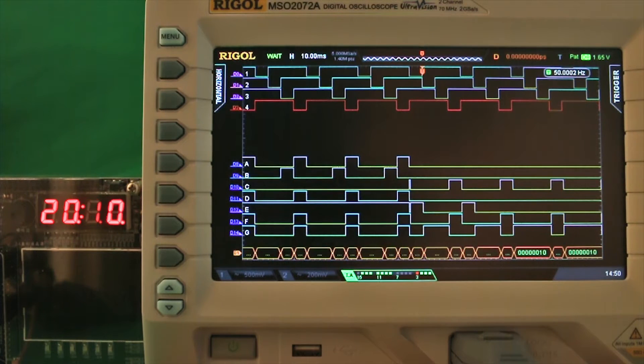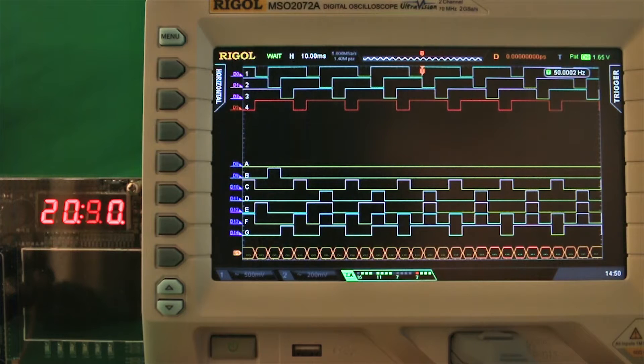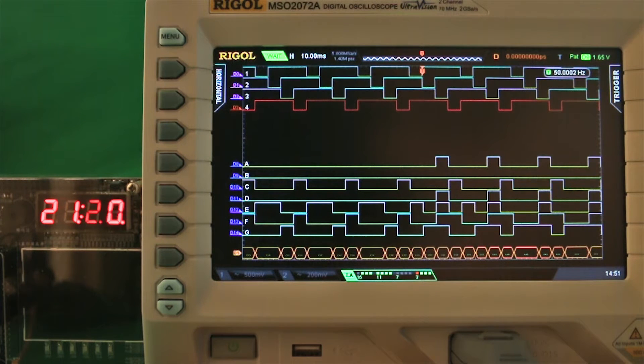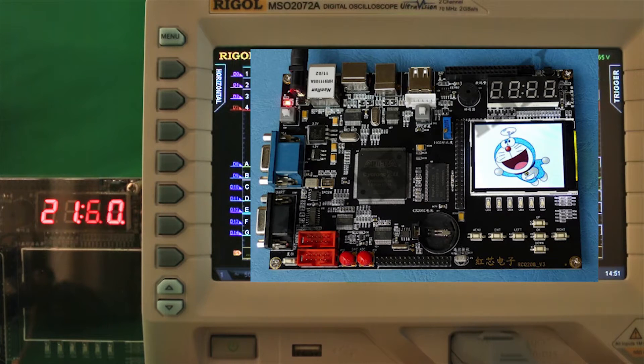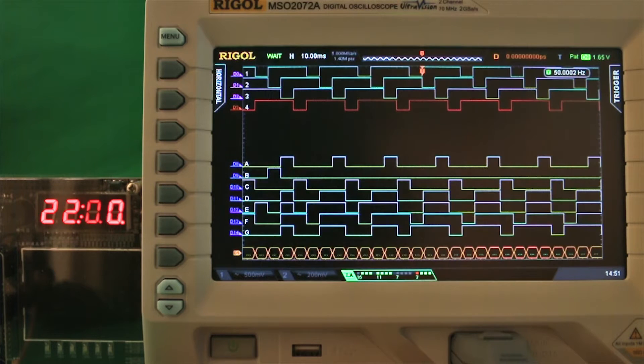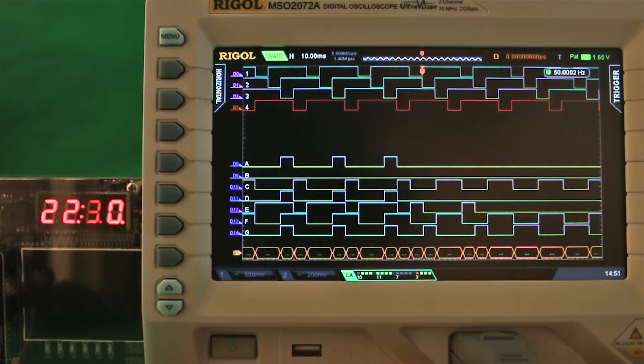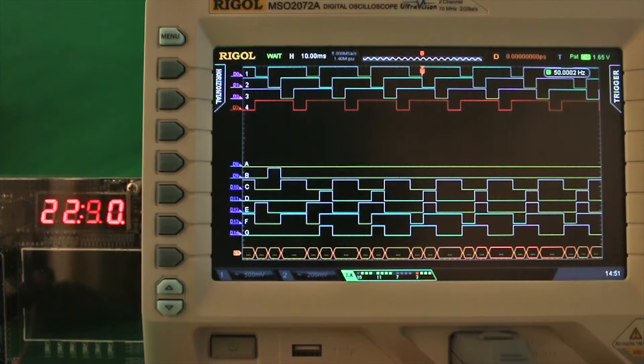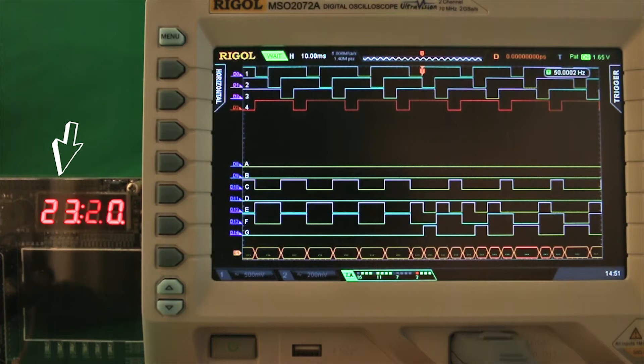Hi, I just got my Rigol MSO2072A scope and I was playing around with it, especially the logic analyzer function. I hooked up the logic analyzer to an FPGA Cyclone dev board to run a very simple program. It's a 7-segment 4-digit display running a time counter of tens of seconds, seconds, tens of seconds and minutes.